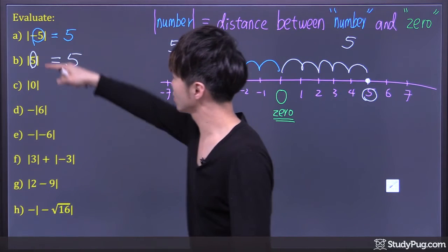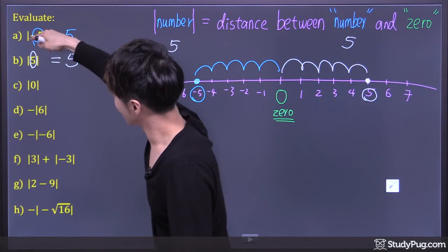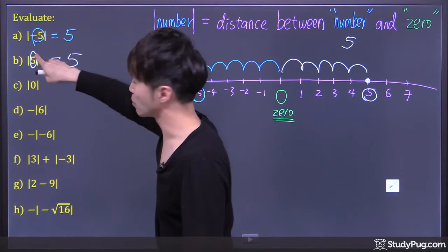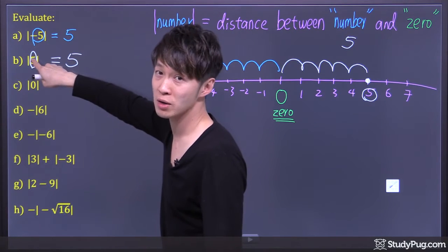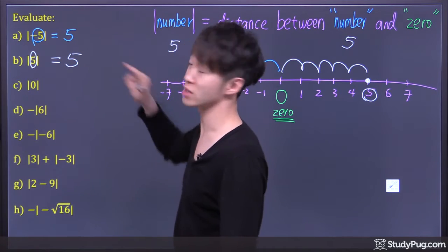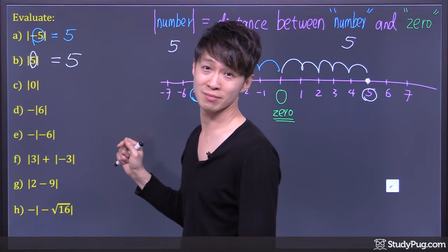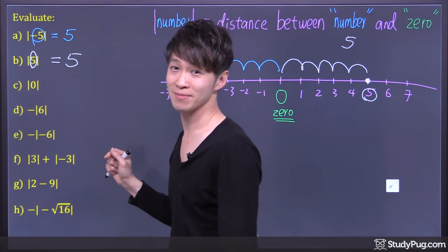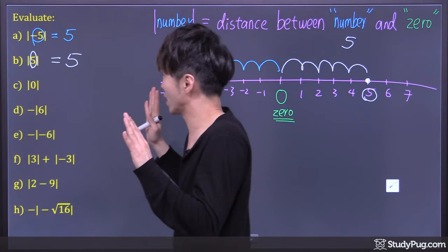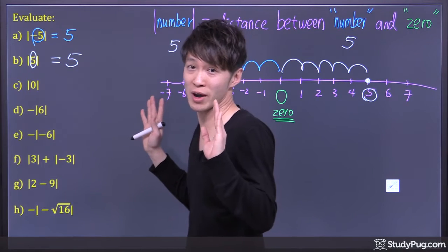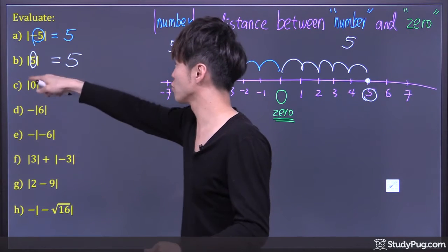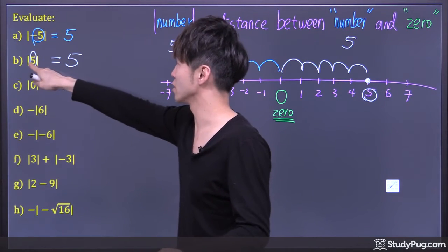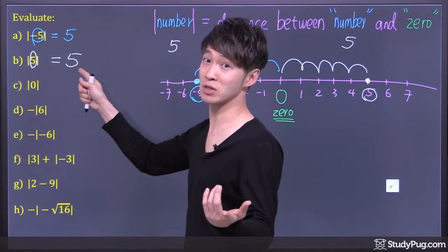Now we know that the absolute value of a positive number is just the number itself. We don't need to make any changes — the absolute value of a positive number is just the number itself.